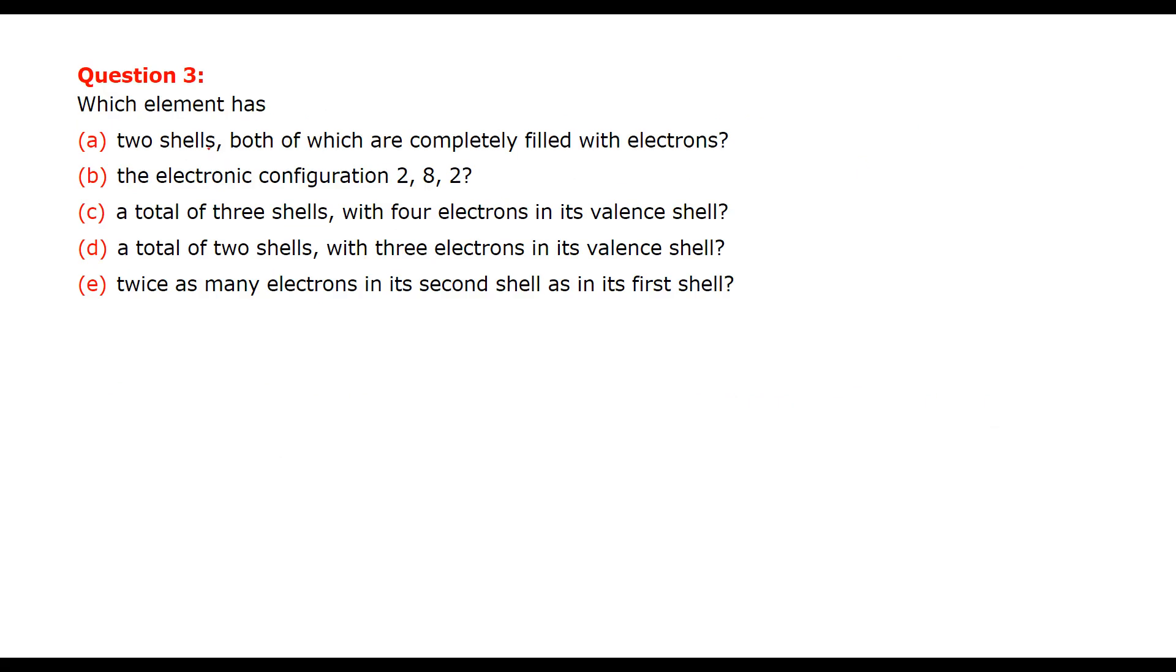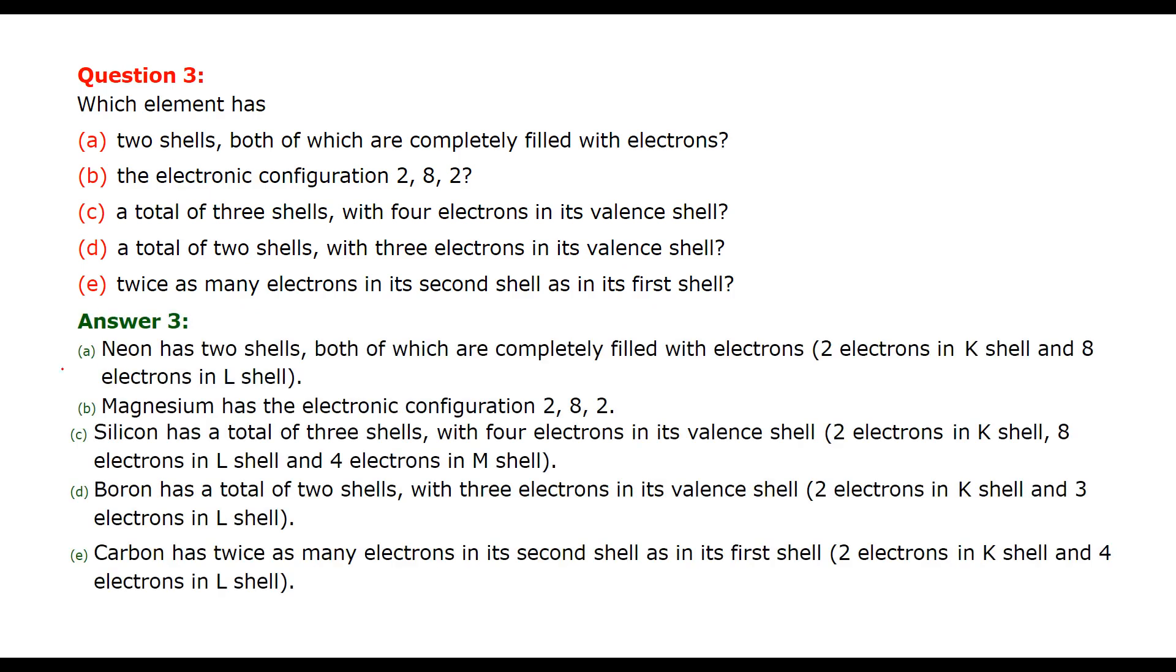Which element has two shells both of which are completely filled with electrons? So let us see one by one. It is neon. Both the K shell and L shell. Let me tell you, if this is a nucleus, this is the K shell, this is the L shell, M shell, like this. So neon has two here and eight here, so both of them are filled.